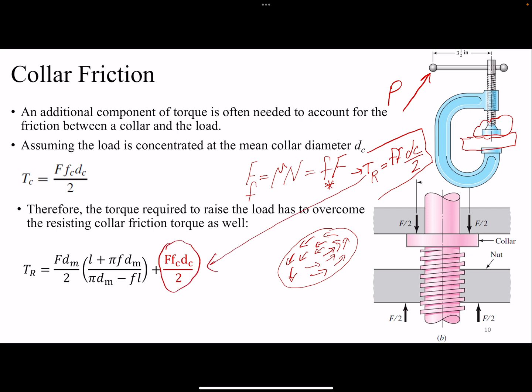This collar torque component must be added to Tr. F is the clamping force, and the friction force here at the collar may differ from friction at the thread — fc and dc is the mean diameter or friction diameter of the collar, depending on the geometry. So now Tr is a larger value with this additional collar component. The same applies to Tl: if you are lowering the load, as in a jack, you must also overcome the collar friction.